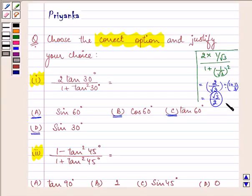And we know the value of root 3 by 2 from the trigonometric ratios that we have learned in our table 8.1 is sin 60 degree. So here the answer to the first part will be sin 60 degree.